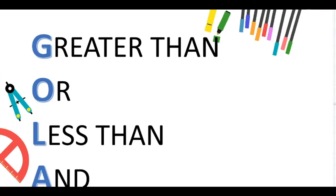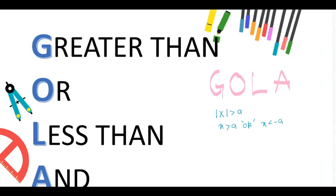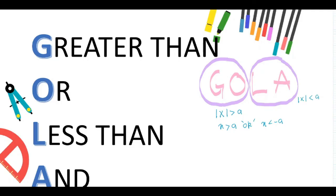We use the GOLA method as an acronym to memorize the basic definitions of absolute inequality. GO means greater than or, and LA means less than and. GO: absolute value of x greater than a gives x greater than a or x less than minus a. LA: absolute value of x less than a gives x less than a and x greater than minus a.